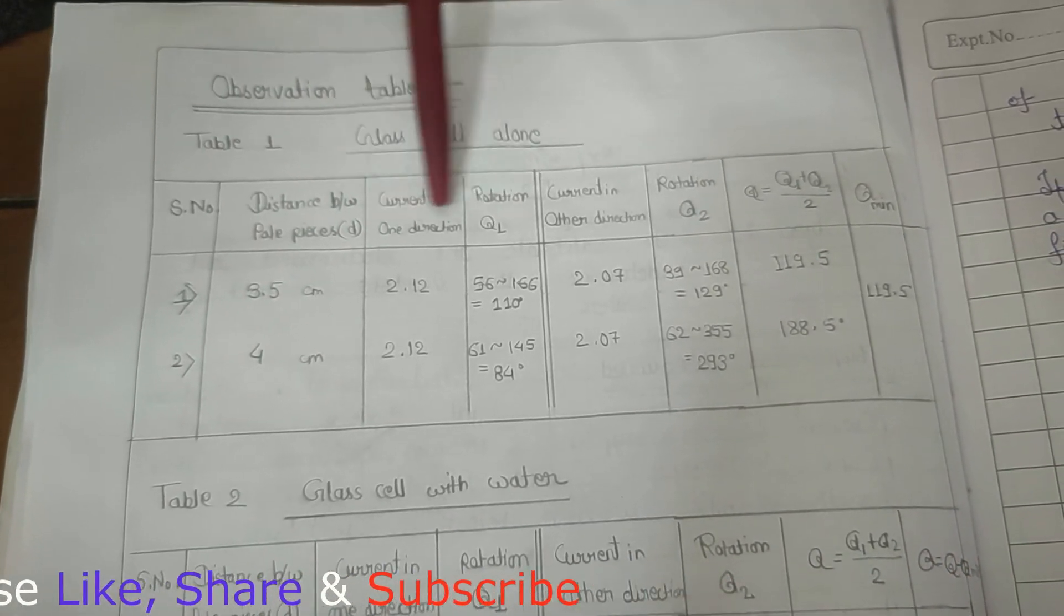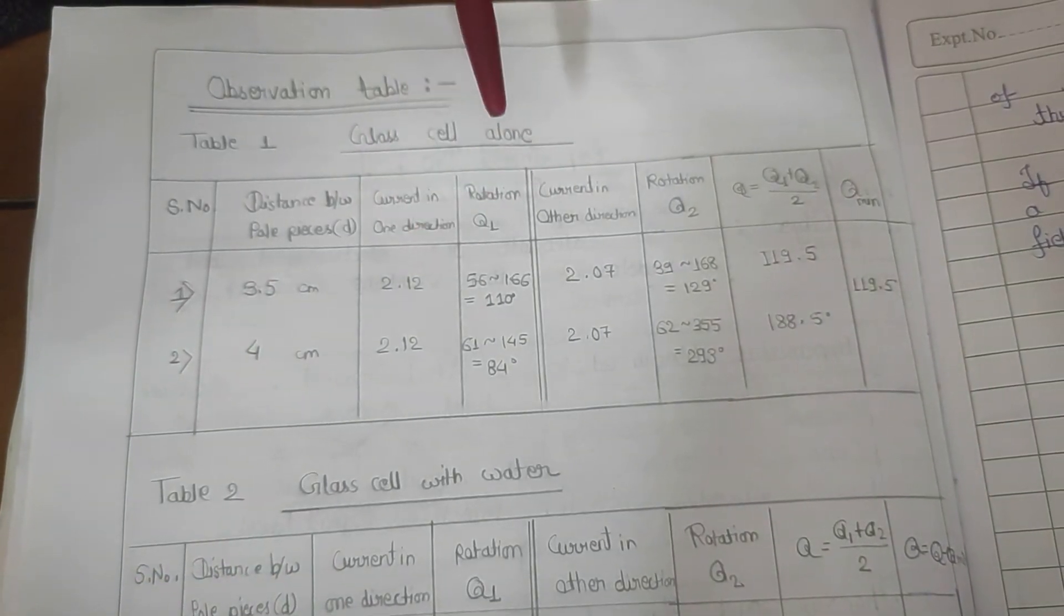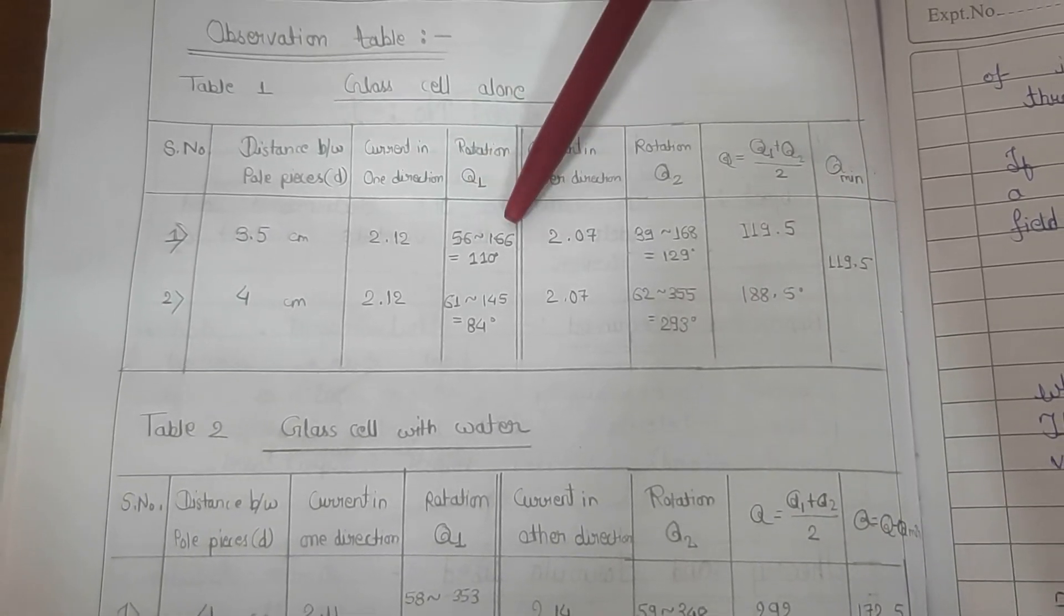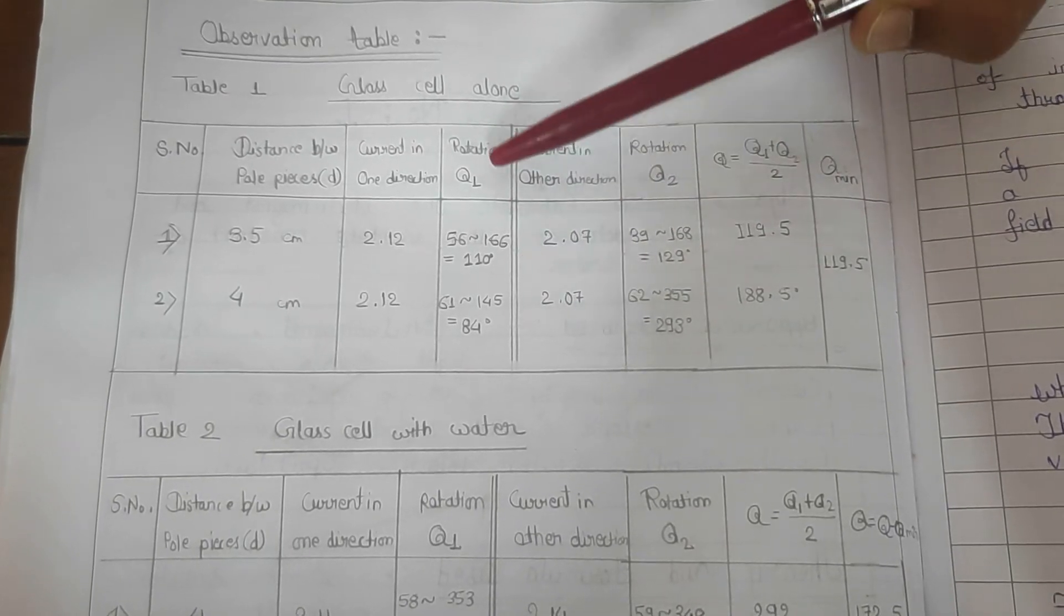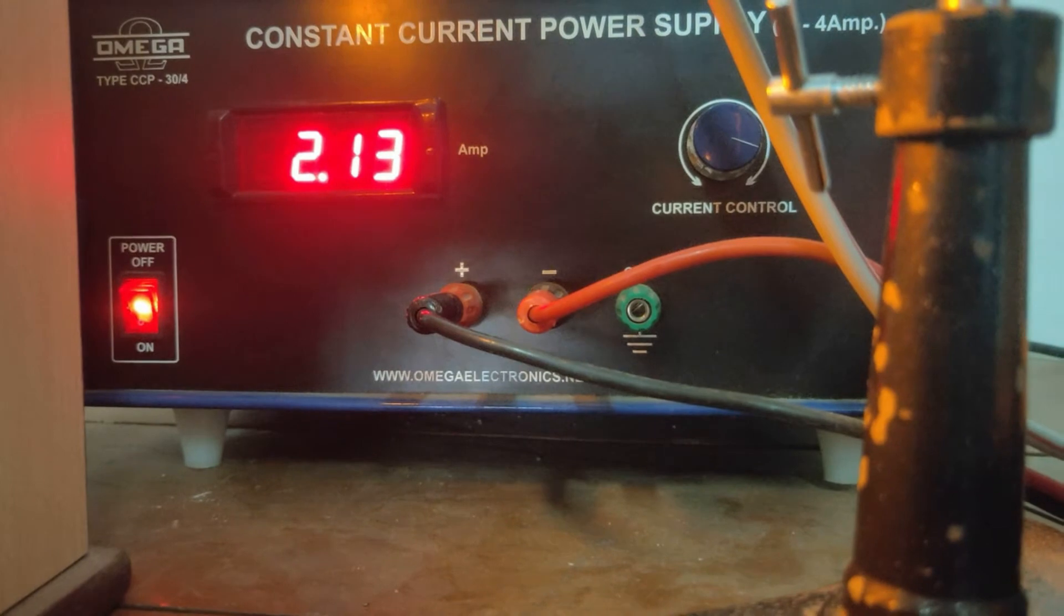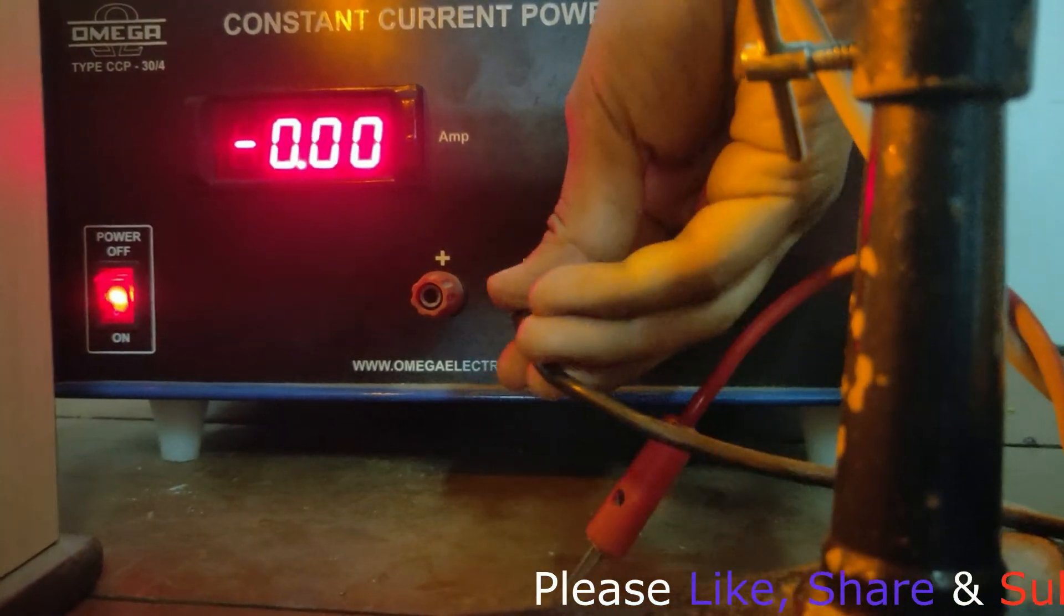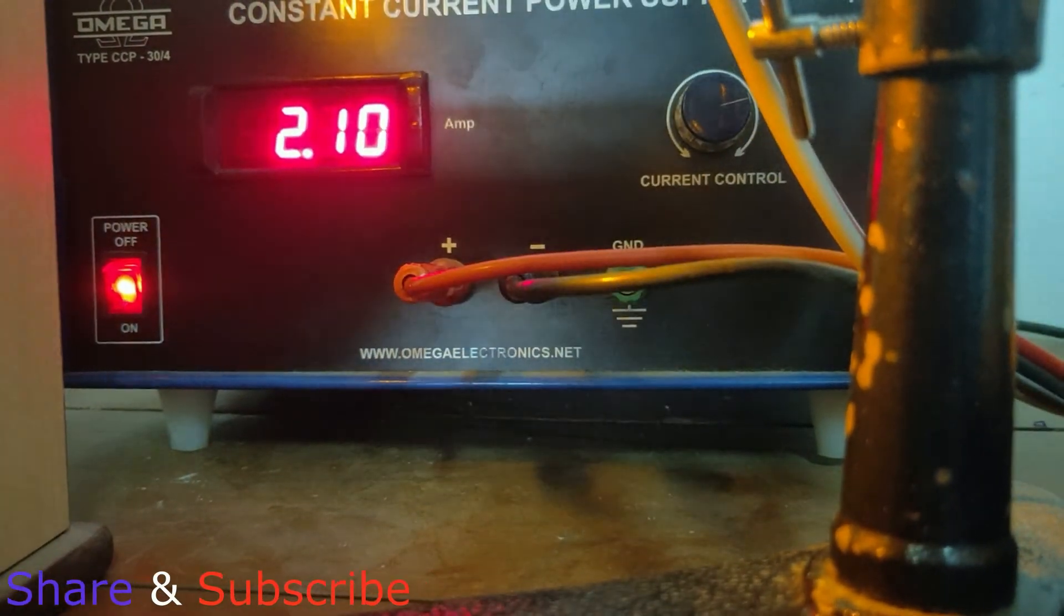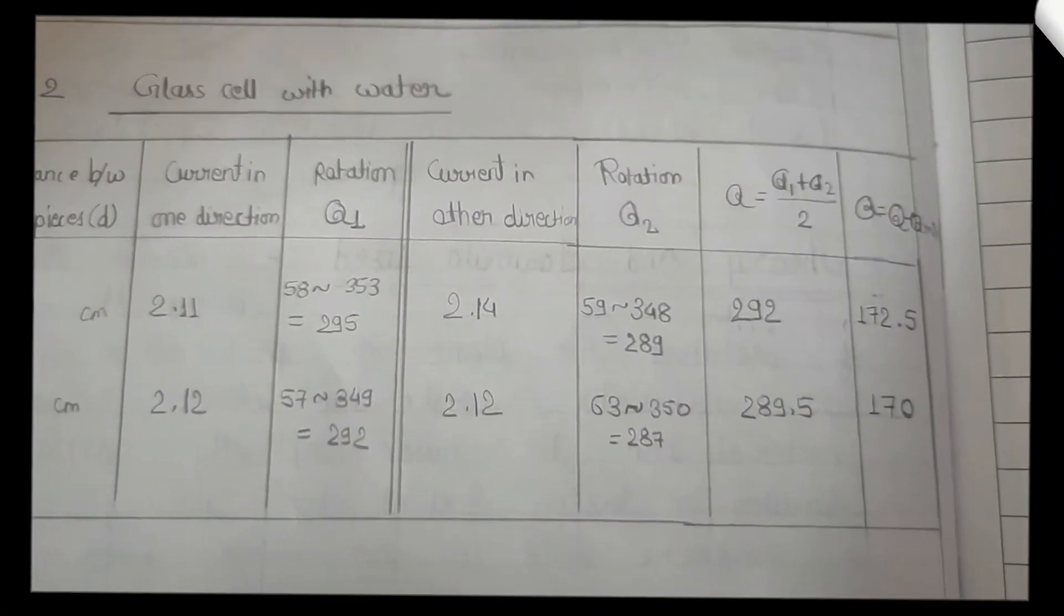Current in one direction. Now we have taken the rotation which is high intensity, and we will take the rotation angle which is low intensity.